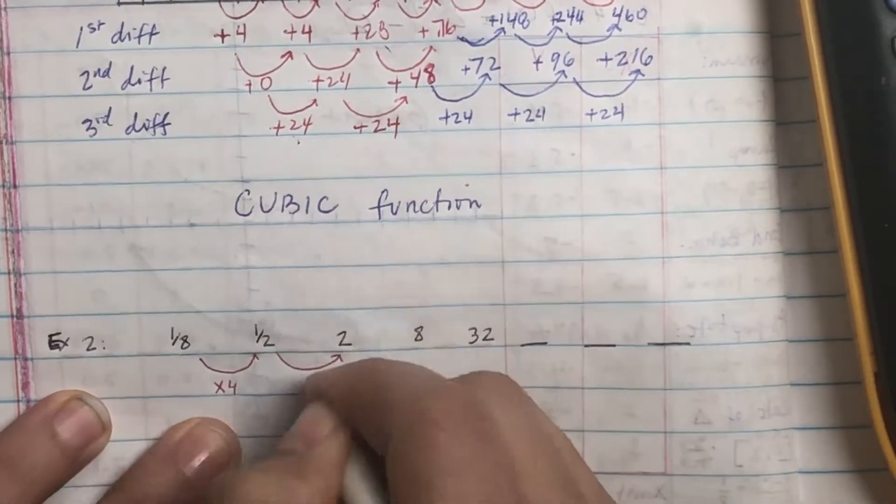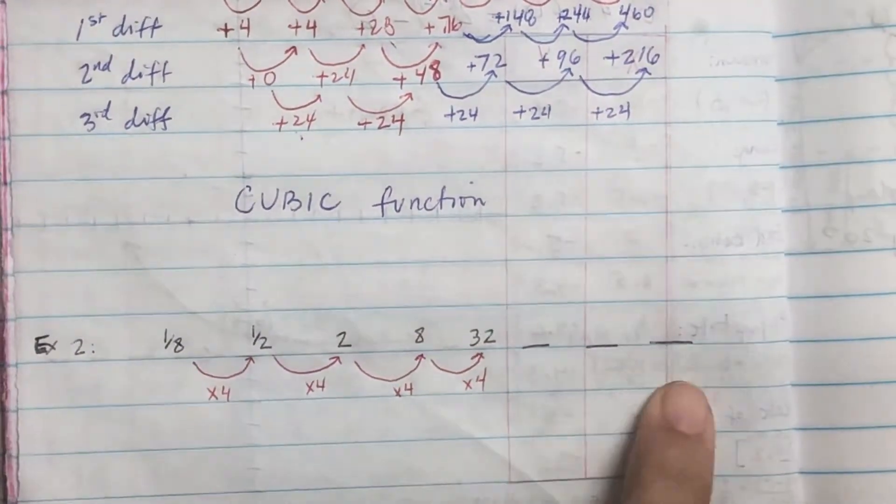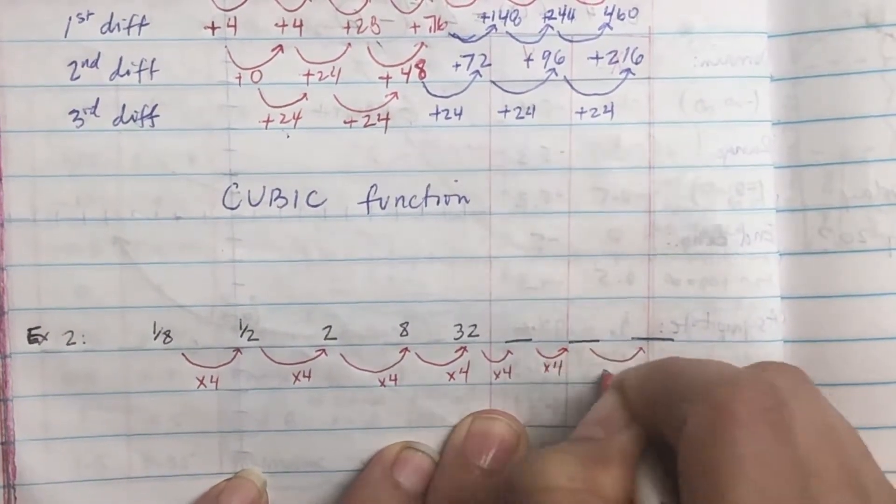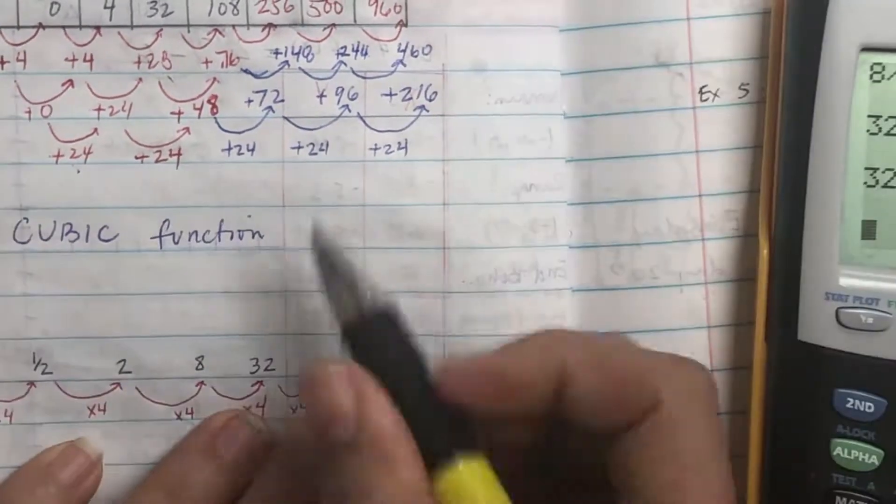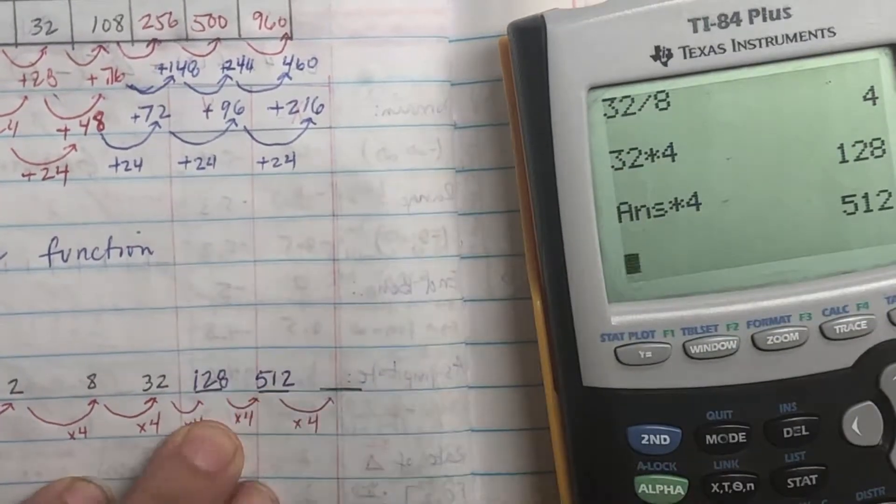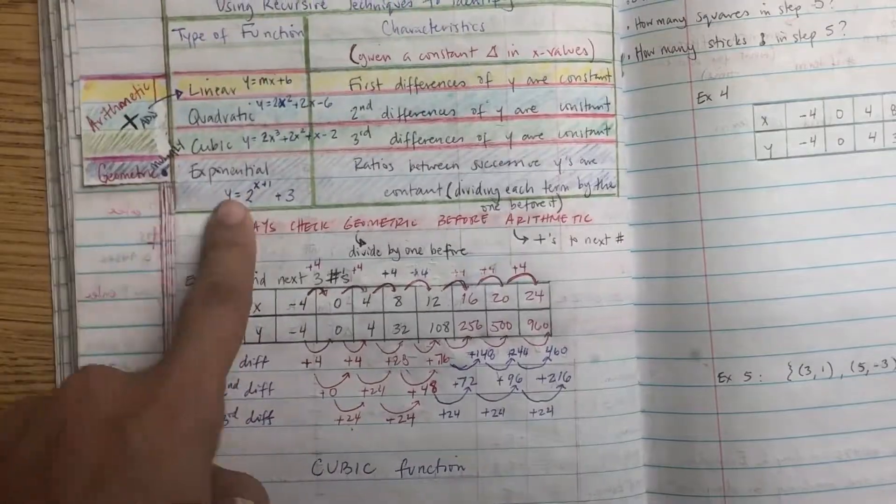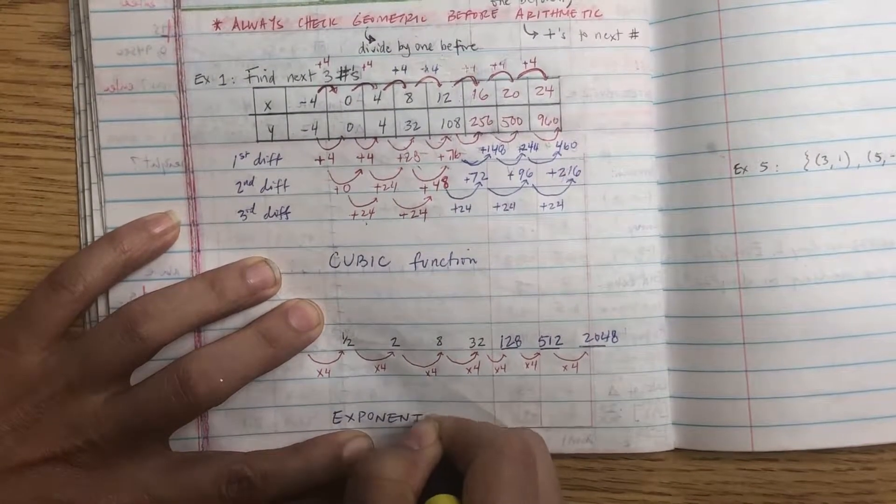Because every single time I'm multiplying it by 4. So now to get the next three numbers, I just need to multiply it by 4. So I take 32 multiplied by 4 to give me the next number. So listening check, color in cubic function, 128. 128 multiplied by 4 will give me the next number. 512 multiplied by 4 will give me the next number. That's pretty much it. So this is an exponential function. Why? Because it's a geometric term. How I get from one number to the next is by multiplying. So listening check, put a box around exponential function.